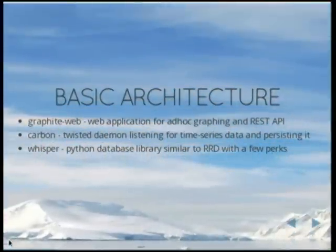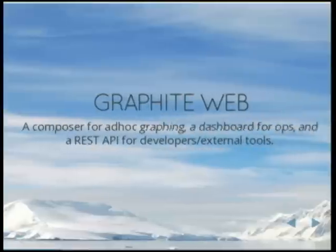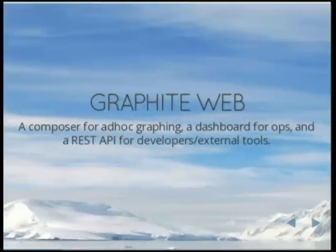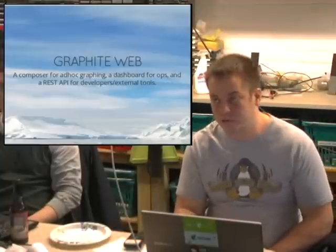Graphite is made of three main pieces: Graphite Web, which is essentially a web UI; Carbon, which is the daemon that writes the cache data out to disk; and Whisper, the database library like RRD. Graphite Web has a composer for building ad hoc graphs, a dashboard for saving and collecting those graphs, and a REST API for developers and other dashboard tools.